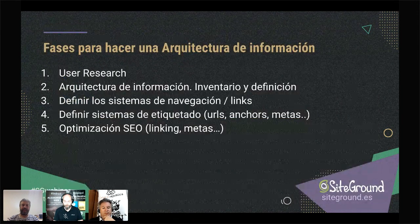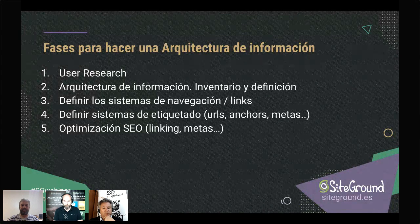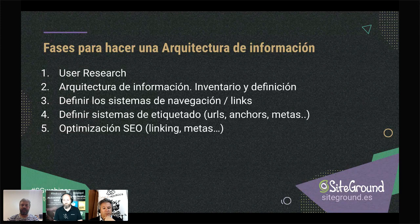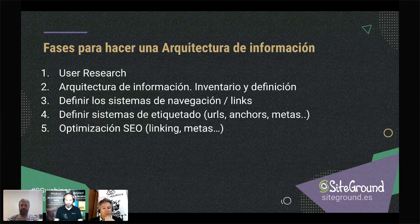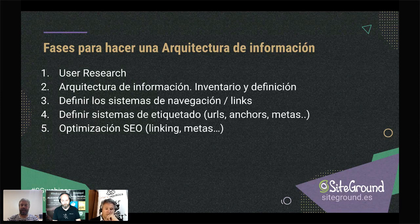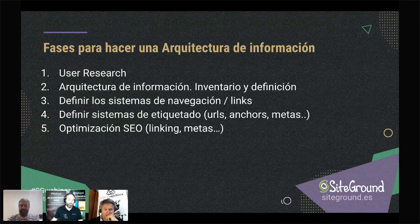Las fases para hacer una arquitectura de información — yo trabajo en cinco fases: primero un user research; luego definir la arquitectura de información con un inventario sacando las URLs de la base de datos; después la definición de los sistemas de navegación y todo el linking interno; luego definir los sistemas de etiquetado —URLs, anchors, cómo nombrar las cosas para que sean accesibles, útiles y optimizadas para SEO— y los metas. Finalmente, doy una capa SEO a toda esta arquitectura, que viene desde hace muchos años del mundo de UX pero que no se ha unido tanto con el SEO.